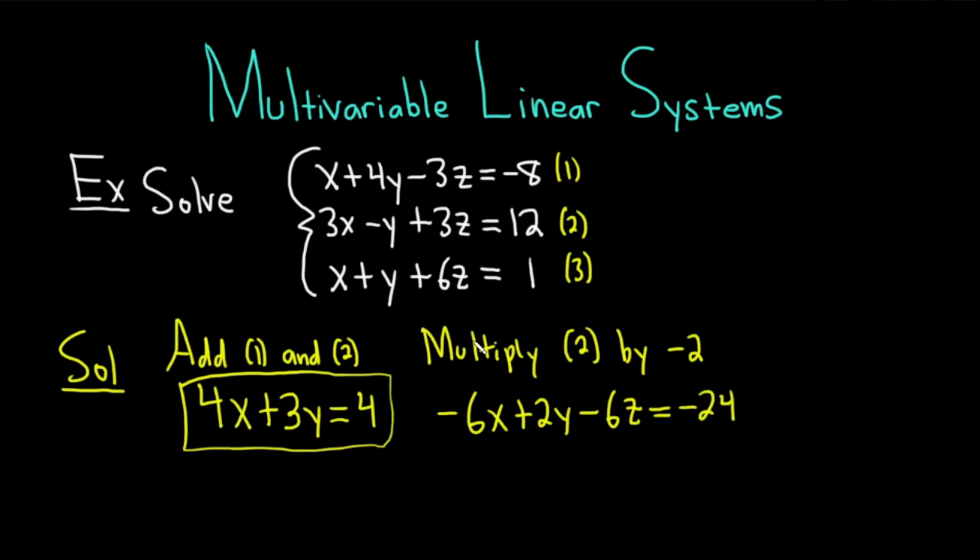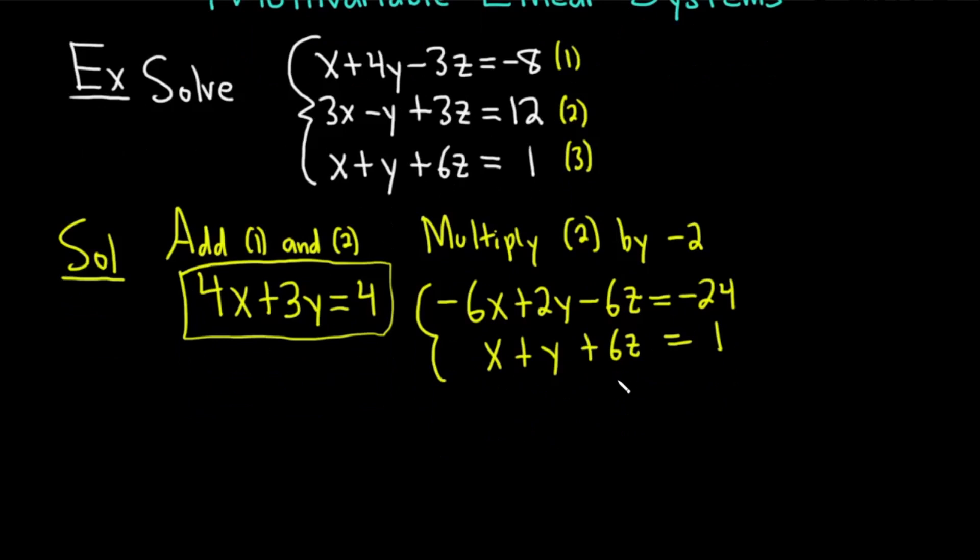Let's just check our work because it's really easy to mess up. Multiplying by negative 2 we should get negative 6x, 2y, negative 6z, negative 24. That's exactly what we have. So now we're going to take this and add it to the third equation. I'm going to write the third equation right below it: x plus y plus 6z equals 1. When we add these we get negative 6x plus x is negative 5x, 2y plus y is 3y.